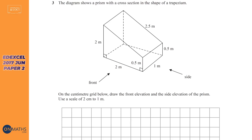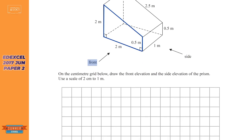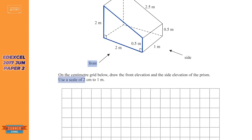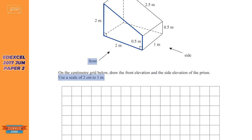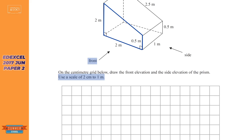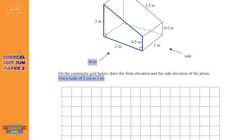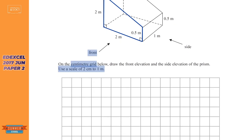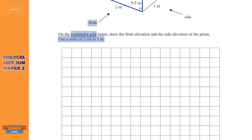Moving on to the Edexcel offering — we're asked to draw a front elevation and a side elevation. The front elevation will be this side here. What we mean by front elevation is if you were perfectly lined up with that side, what would you see? This needs to be to scale because the question says use a scale of two centimeters to one meter. It's two meters tall, so two centimeters equals one meter, meaning one square equals one centimeter, which is half a meter. So two meters will be four squares.